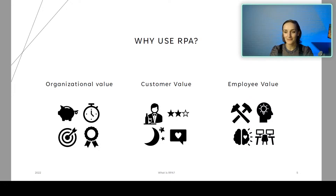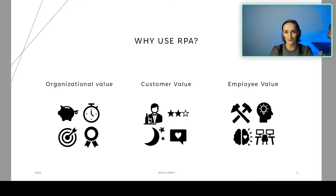Then the last part is the employee value. The value for employees is that they get a better toolbox. They feel more innovative when working because they don't have to do all these mundane, repetitive tasks. They get to use the right side of their brain instead of just producing and producing. And ultimately they want to stay in their job because they are satisfied with the tasks and tools they've been given.